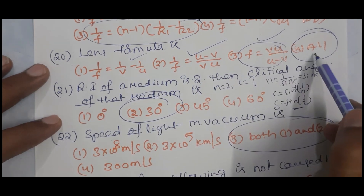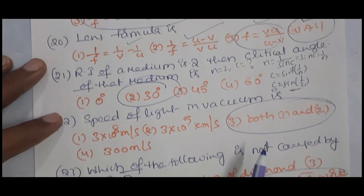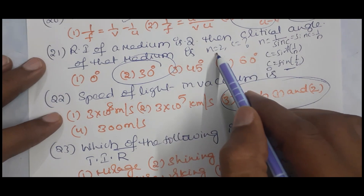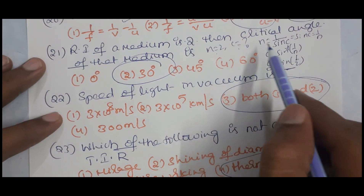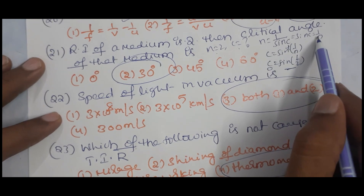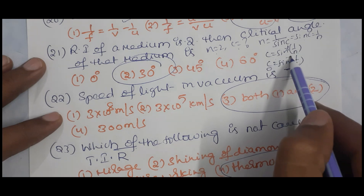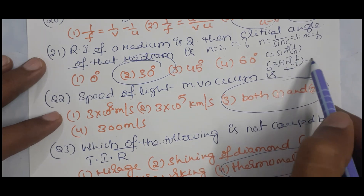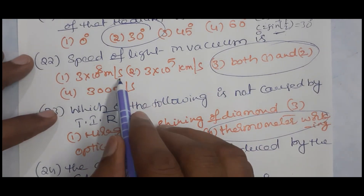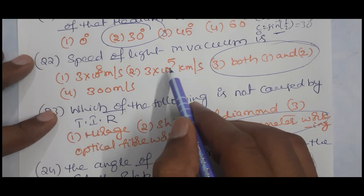The refractive index n of a medium is 2. The critical angle C is given by sin C = 1/n, so C = sin⁻¹(1/2) = 30 degrees.